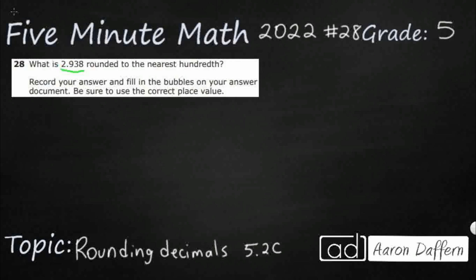We need to know what the hundredths place is first, so let's make sure we've got our place value down. I see one digit to the left of the decimal and three digits to the right. This is our ones place right here — there's a 2 in the ones place. The ones place is always the first digit to the left of the decimal, and if there's no decimal in a number, it's always the farthest digit to the right, because the decimal goes beyond to the right of the ones place.